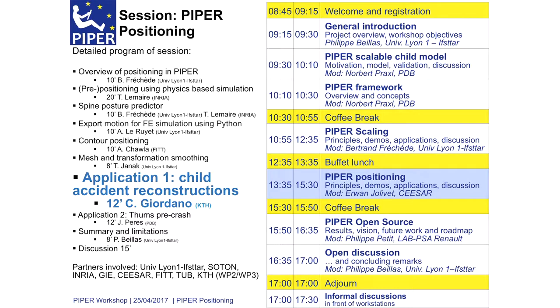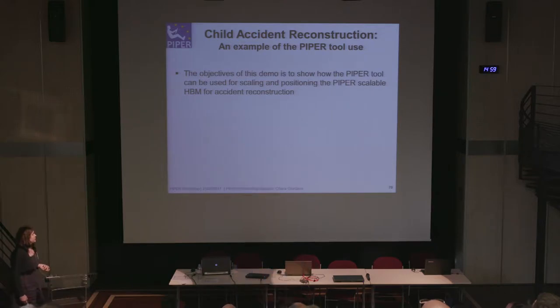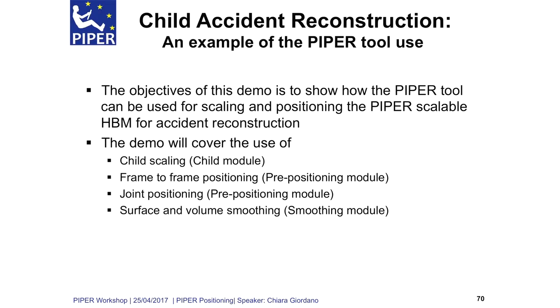Now I'm going to show you an application: how to use the Piper tool together with the Piper Scalable HPM to perform child accident reconstruction. I'm going to guide you how to use the tool to do some child scalings using the child modules, frame-to-frame positionings, joint positioning with a pre-positioning module, and surface and volume smoothing with a smoothing volume.